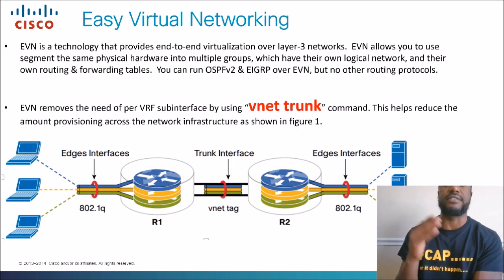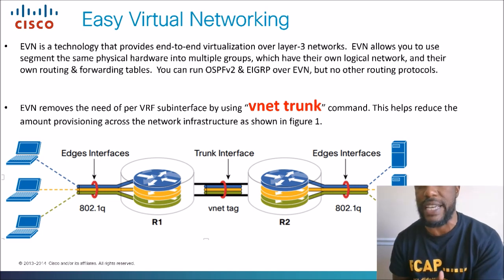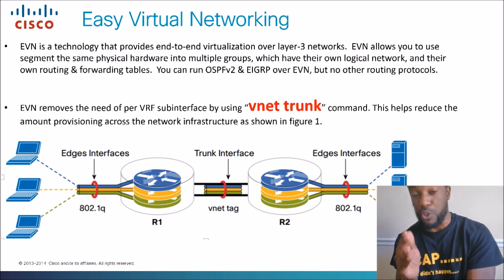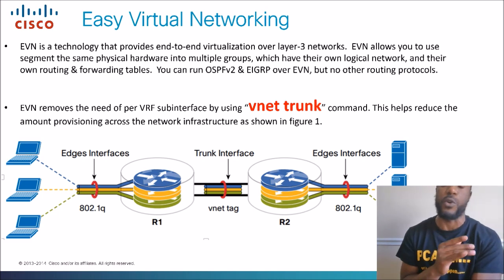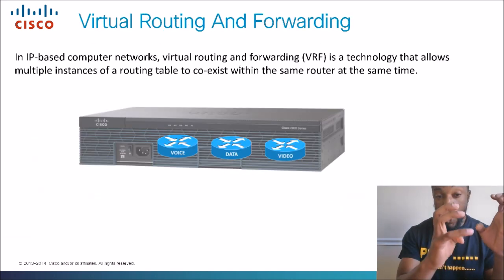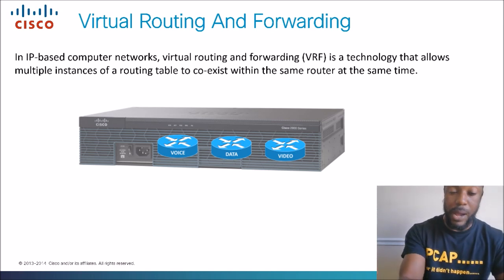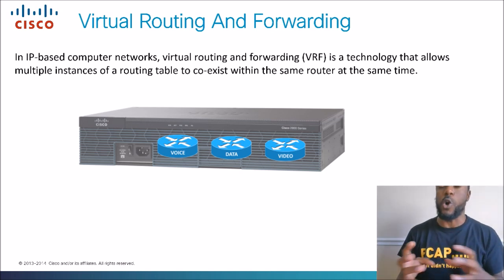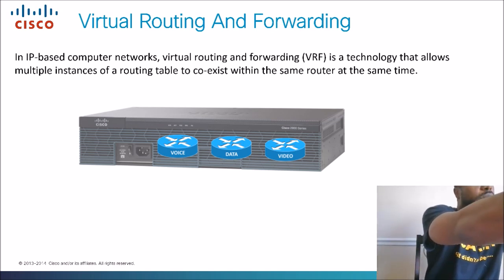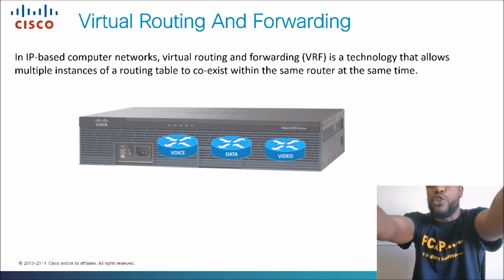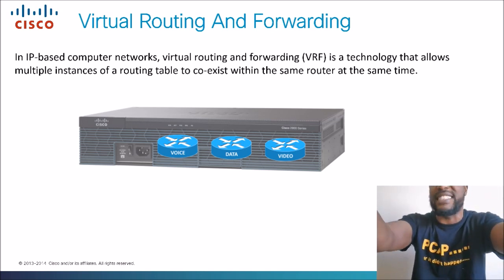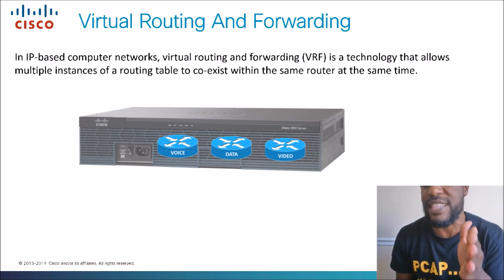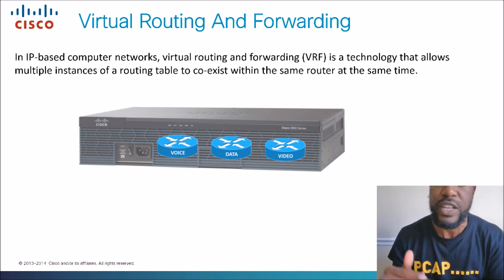So, Easy Virtual Networking — EVN is a technology that provides end-to-end virtualization over layer three networks. EVN allows you to segment the same physical hardware into multiple groups, which have their own logical network and their own routing and forwarding tables. So just like we have virtual routers within this physical router, we can have separate virtual networks. So you can have a network for just one department, another network for IT — but they're virtual networks with their own routing tables, their own VLANs, etc. That's what EVN does — except VRF does that as well, but the configuration is just so long and involved. EVN makes it a lot easier.